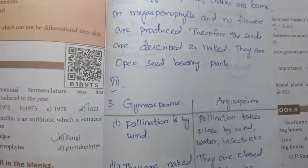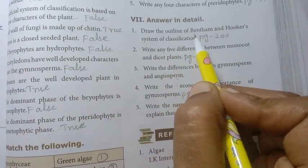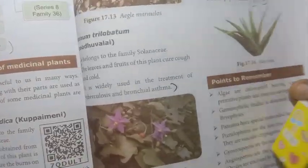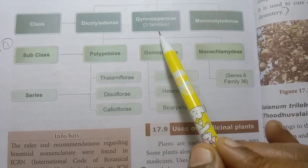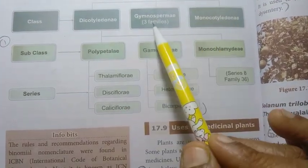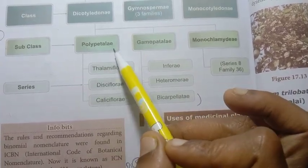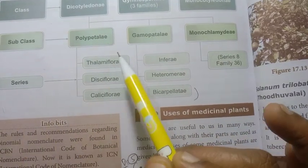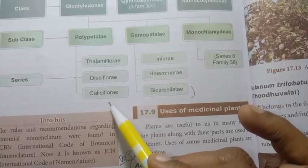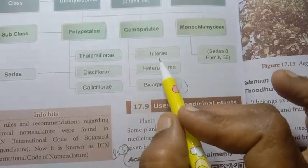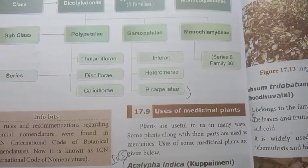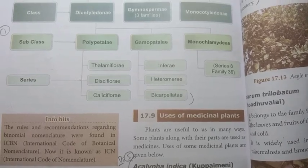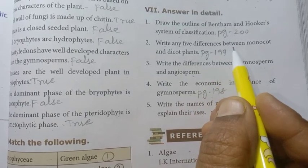Those are four points in detail. First detail question: Draw the outline of Bentham and Hooker system of classification, page number 200. Second detail question: Write any five differences between monocot and dicot plants, page number 199.